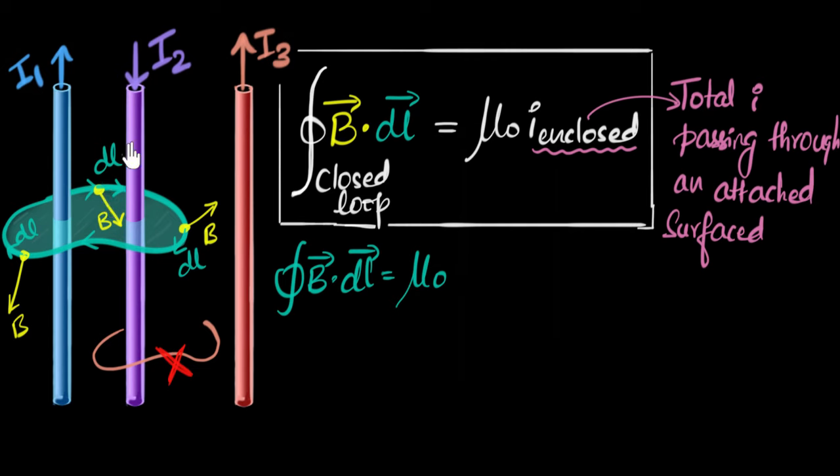Only I1 and I2 are passing through the attached surface. They are the only ones enclosed. I3 is not. So I3 will not be in the picture. So the total will be I1 plus I2.